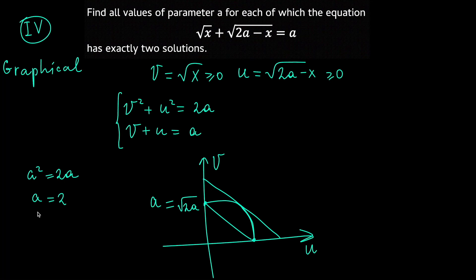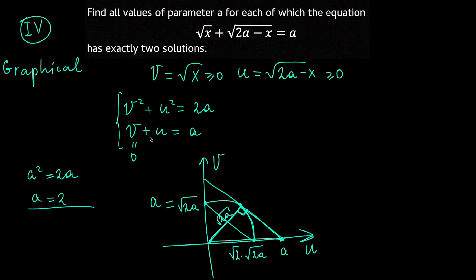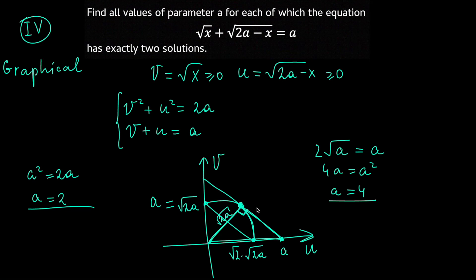A = 0 is excluded as before, so A = 2. In the other extreme position the line is tangent to the circle, with the radius perpendicular to the line. This forms an isosceles right triangle whose hypotenuse is √2 times its leg, so the intercept on the u-axis is 2√A. Setting u = A gives 2√A = A, so A = 4. Since at A = 2 there are exactly two solutions and at A = 4 only one, the answer is A ∈ [2, 4).